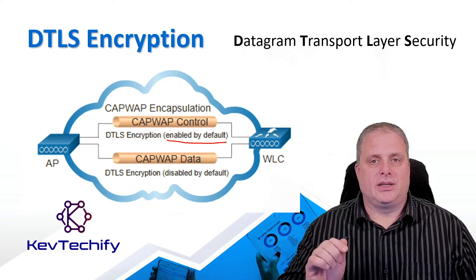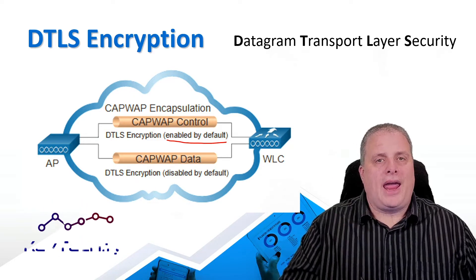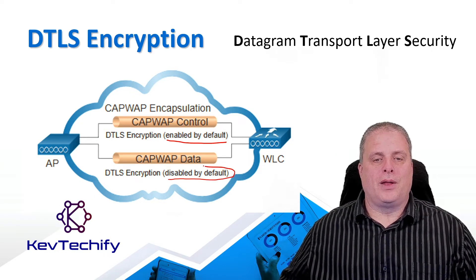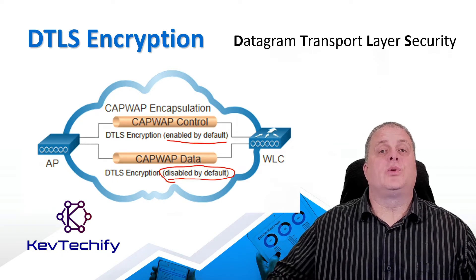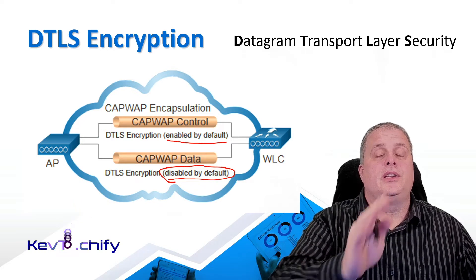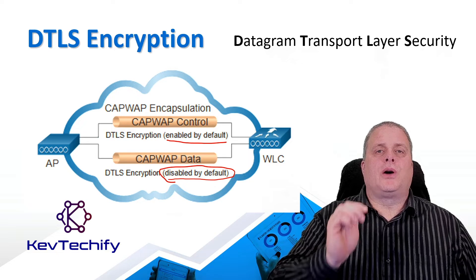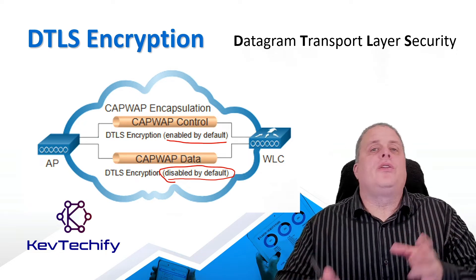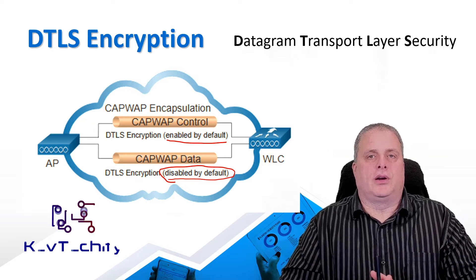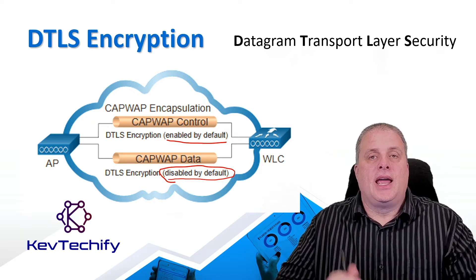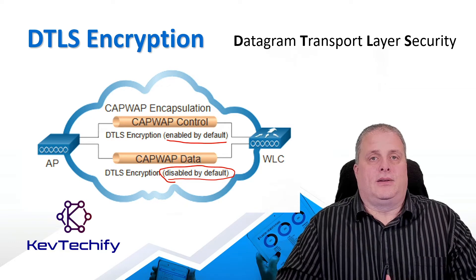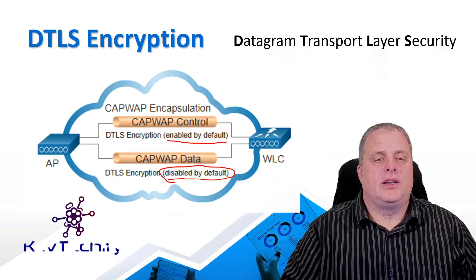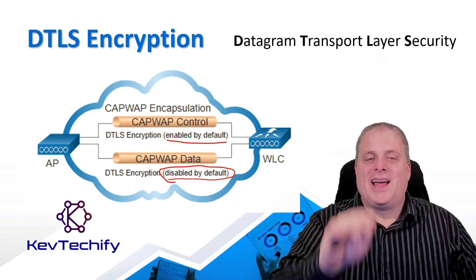If you want to encrypt all your data using DTLS on the data channel, you have to buy a separate license in the Cisco world — it is disabled by default. As the administrator, you need to decide how important your data is and whether it's worth the cost. Maybe you have other technologies handling that encryption, such as a VPN server where corporate security policy requires VPN use whenever connecting to the corporate network. It's up to you and your company to determine if you need that additional encryption on your CAPWAP data channel.